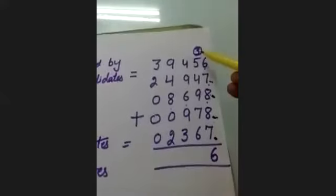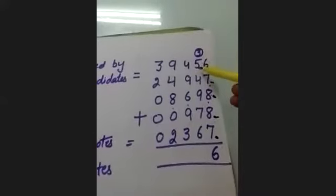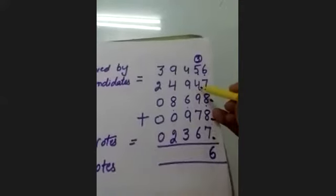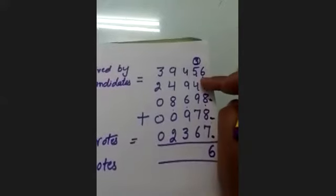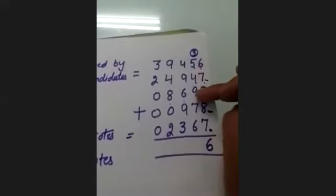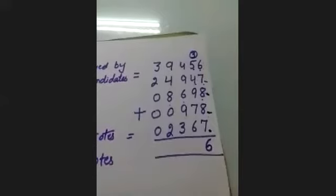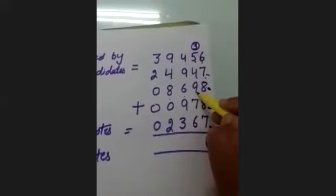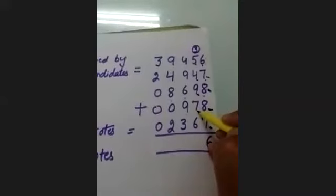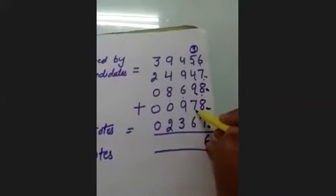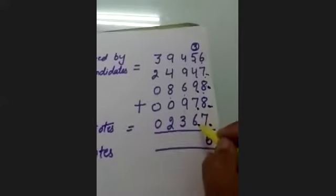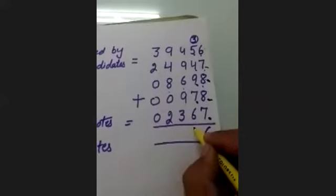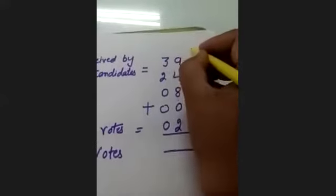Next column: 3 plus 5 is 8, plus 4 is 12, plus 9 is 21, plus 7 is 28, plus 6 is 34. Write 4 and carry 3.